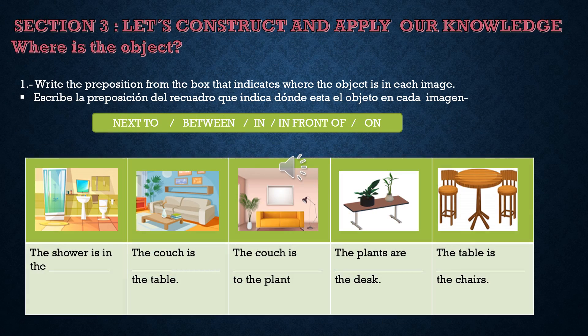Section 3. Let's construct and apply our knowledge. Where is the object? Activity 1. Write the preposition from the box that indicates where the object is in each image. Escribe la preposición del recuadro que indica dónde está el objeto en cada imagen. Preposiciones: next to, between, in, in front of, on.